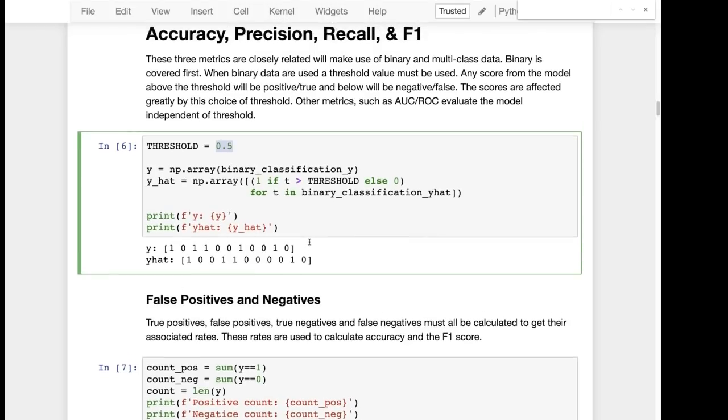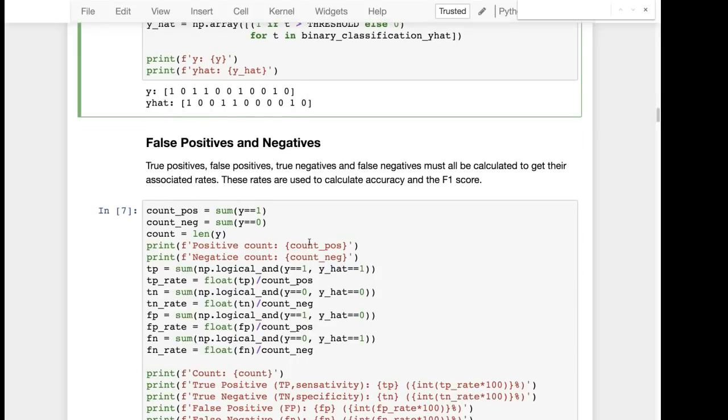Accuracy, precision, recall, and f1 are very dependent on you setting that threshold. And changing the threshold will change the values that you get back for measuring how good your model is. There's other metrics that we'll see in a moment, namely AUC and ROC, are independent of the threshold. So we'll deal with false positives and false negatives.